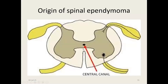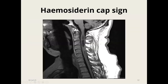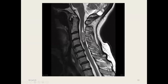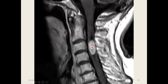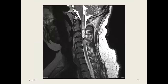Spinal ependymomas arise from the spinal canal. On T1 imaging, you can see a hemosiderin cap around the lesion — this is called the hemosiderin cap sign in spinal ependymoma. There is also T2 signal change with heterogeneous intensity. Another lesion shows homogeneous enhancement. Variable degrees of perilesional edema are found. As the tumor progresses, it causes weakness of the limbs depending on location, bladder and bowel disturbances, and sensory disturbances.